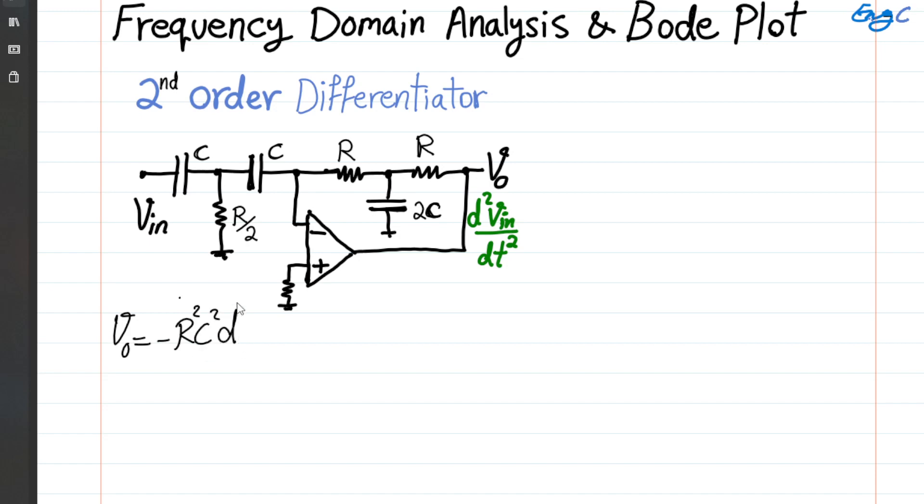If we take the Laplace transform from both sides of this equation, we get Vout as a function of S domain function is negative R squared C squared S squared, and then Vn as an S domain function.